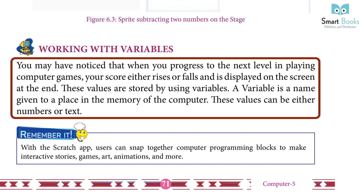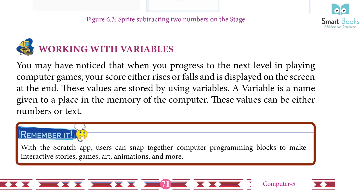Working with Variables: You may have noticed that when you progress to the next level in playing computer games, your score either rises or falls and is displayed on the screen. These values are stored using variables. A variable is a name given to a place in the memory of the computer. These values can be either numbers or text.